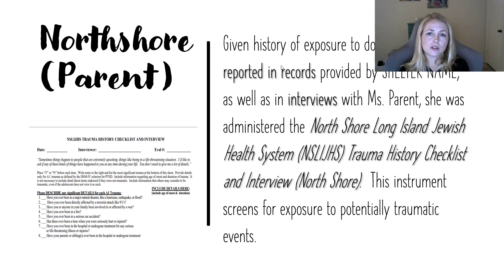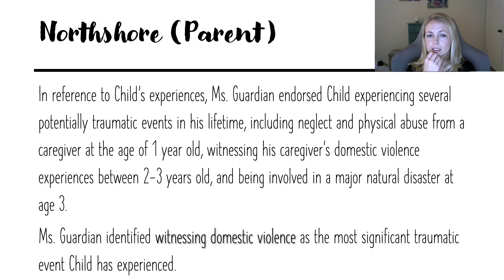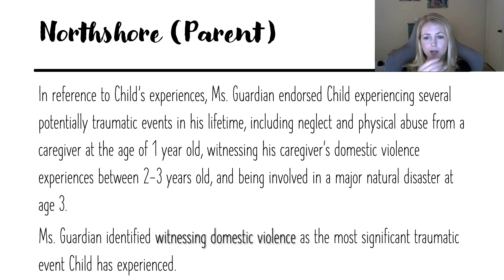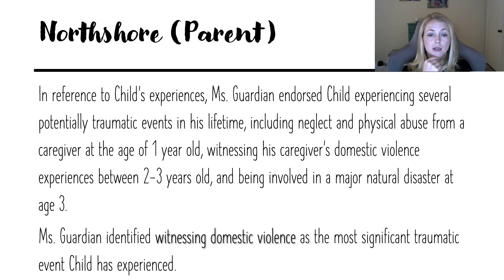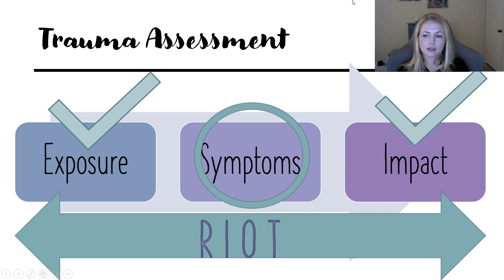In the report, this is how it was written: the parent endorsed him experiencing several potentially traumatic events in his lifetime, including neglect and physical abuse at age one, witnessing domestic violence for a long time before they moved to the shelter, and being involved in a major natural disaster — Hurricane Harvey — when he was three. Then we asked her to identify what she thought was the most distressing. Witnessing domestic violence she identified as the most significant traumatic event. With that index event, we're going to look at the symptoms.